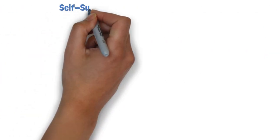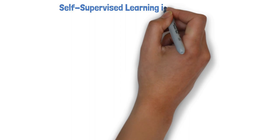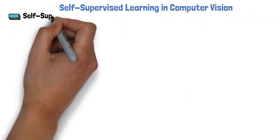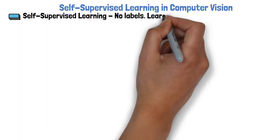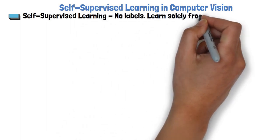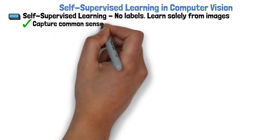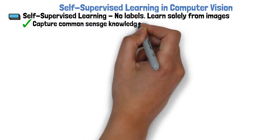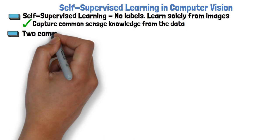Let's start with essential background about self-supervised learning in computer vision. Self-supervised learning means our training data has no labels, and the model learns solely from the images, which helps to capture common sense knowledge from the data itself. This is important for learning in a more human-like method.